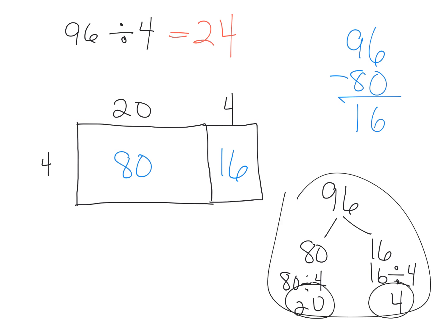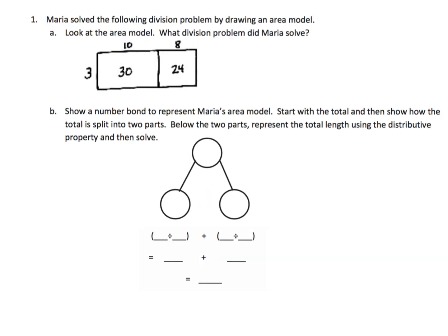So this is using that number bond and showing the distributive property. Right here, it's showing the area model. And let's get practicing with some actual problems. It says Maria solved the following problem using the area model. Look at the area model. What division problem did she solve?